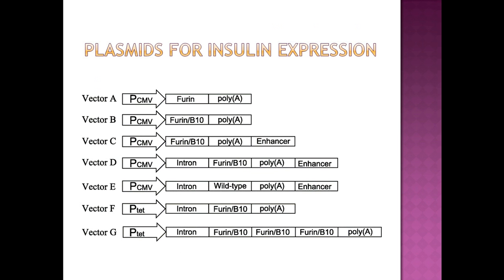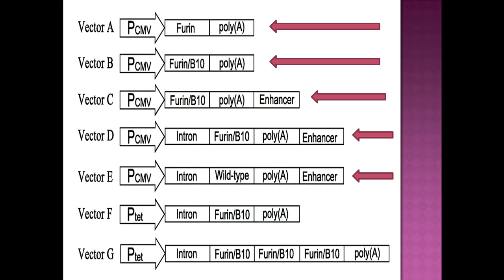Plasmids for insulin expression. Plasmids are DNA molecules separate from nuclear DNA that can replicate independently. This graph shows vectors A to G. Vectors A to E are five plasmids constructed to systematically increase expression of insulin in HepG2 cells.